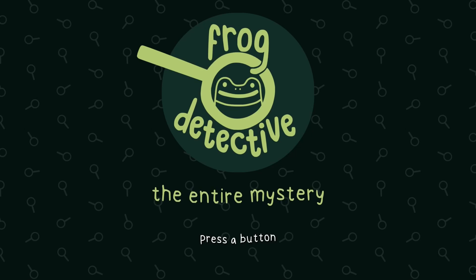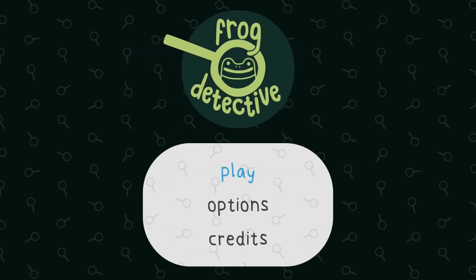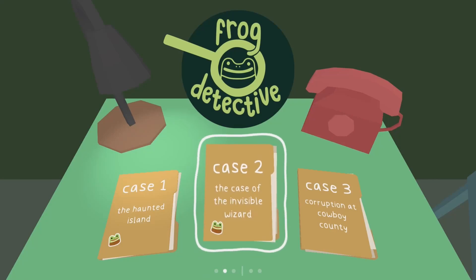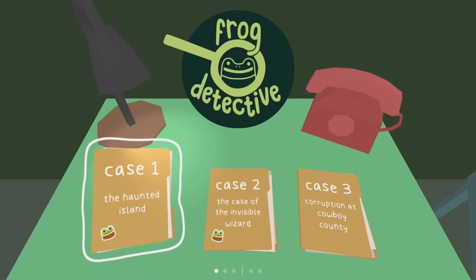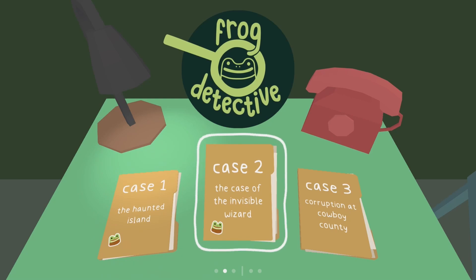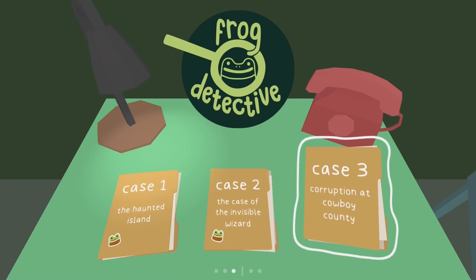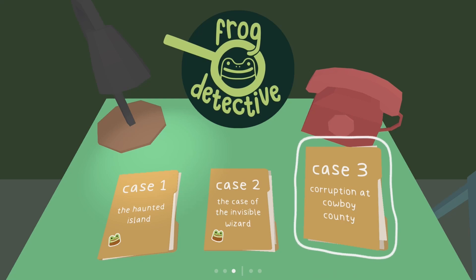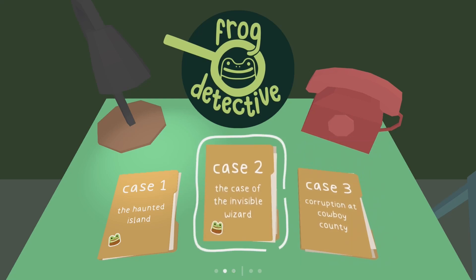Hello my friends, are you ready for the next case? The third and final case of the Frog Detective. We played the Haunted Island, we played the Case of the Invisible Wizard, and now it's time for Corruption at Cowboy County! I hope it gives us a full introduction, because at the end of the Case of the Invisible Wizard it gave us a pretty good intro.